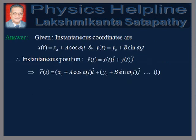Now for the answer. The instantaneous coordinates of the particle are given by X(T) equals X₀ plus A cos(ω₁T) and Y(T) equals Y₀ plus B sin(ω₂T). Therefore, the instantaneous position vector is R(T) equals X(T) î plus Y(T) ĵ, which gives R(T) equals (X₀ plus A cos(ω₁T)) î plus (Y₀ plus B sin(ω₂T)) ĵ.